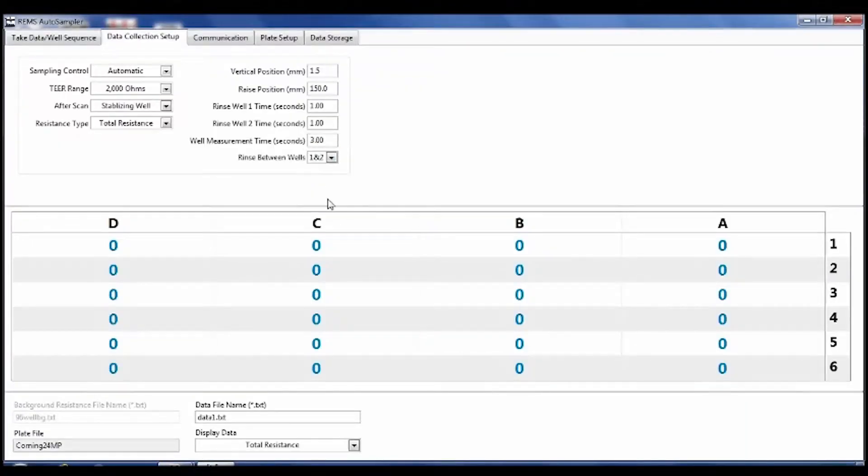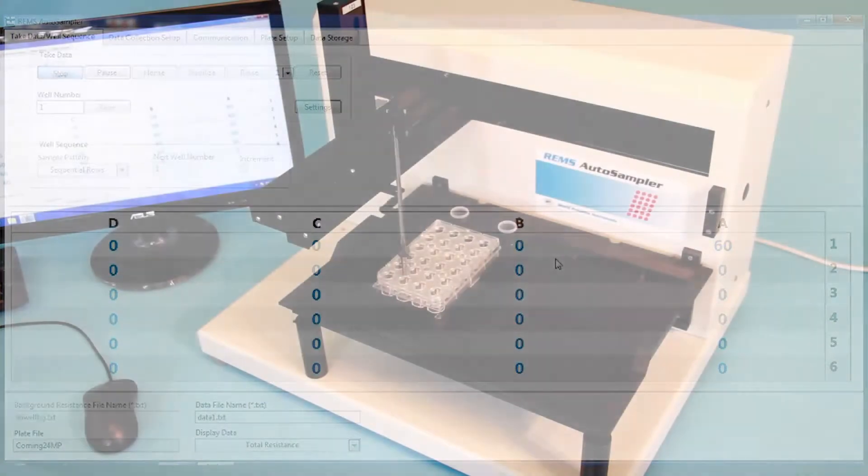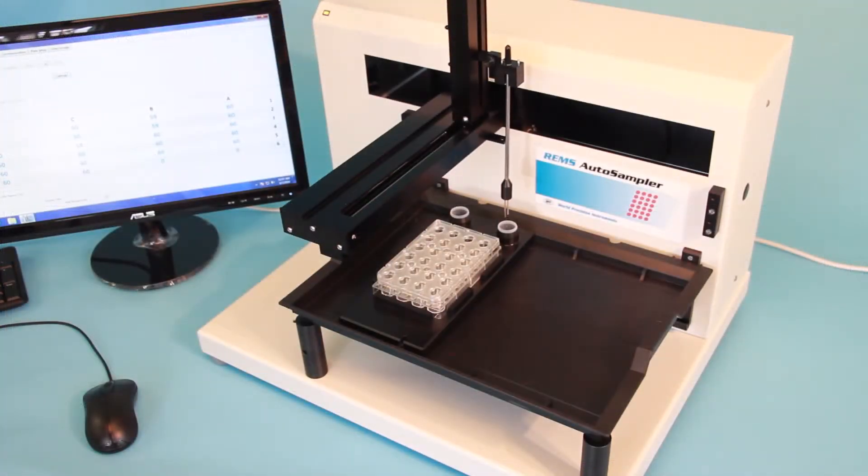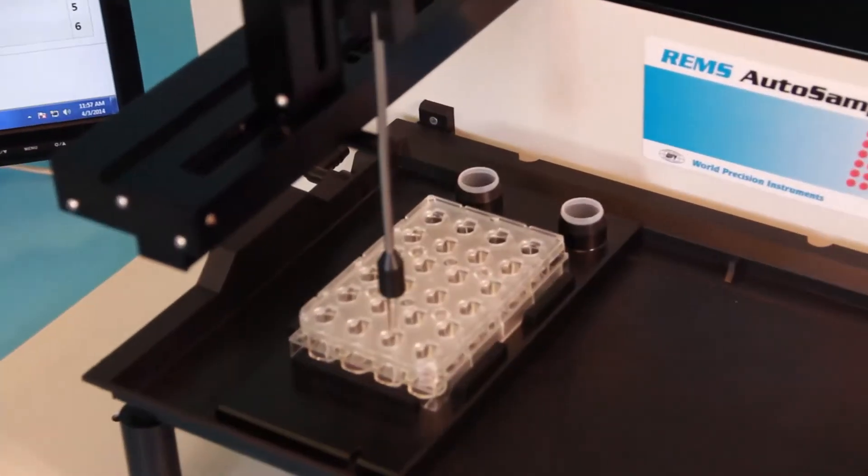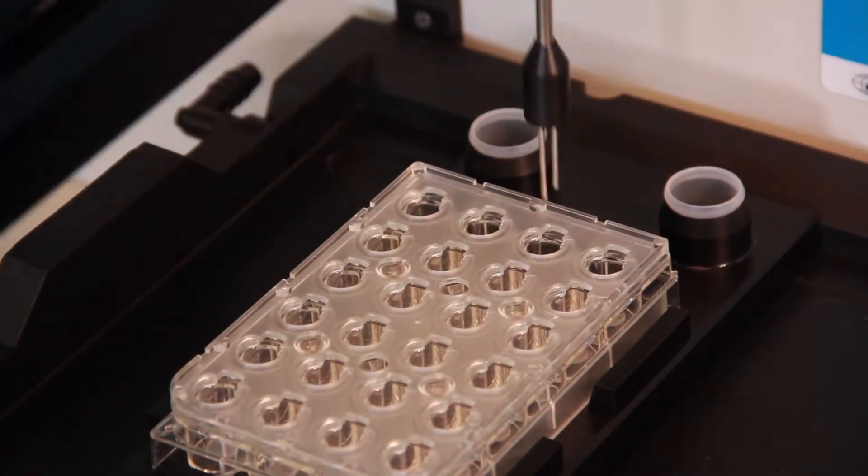In many applications, there is a concern about the prevention of cross-contamination from well to well. To address this issue, WPI expanded the system to include two user assignable rinse locations. After each measurement, you can choose to rinse at either station, both stations, or eliminate rinsing from the protocol altogether.